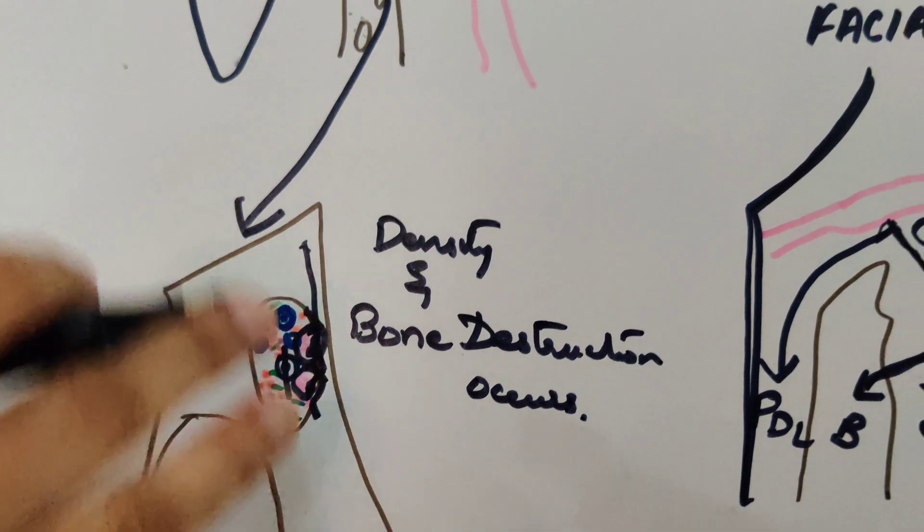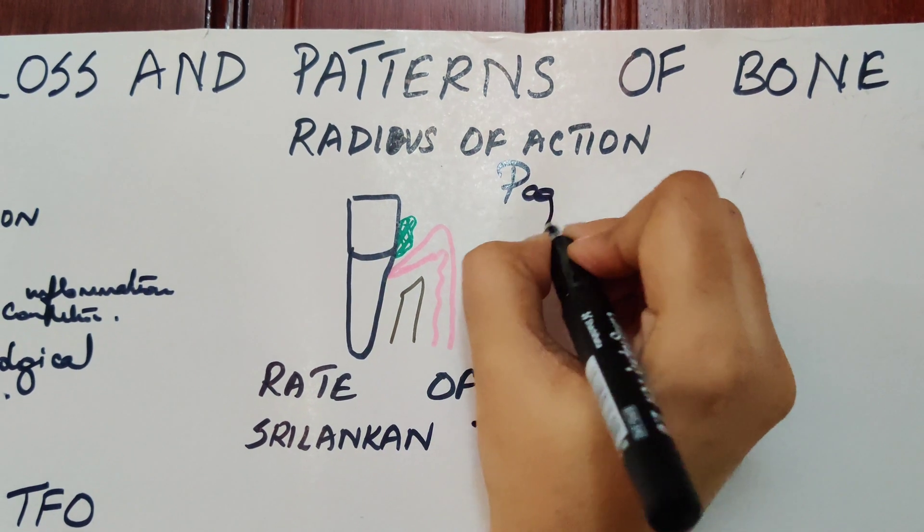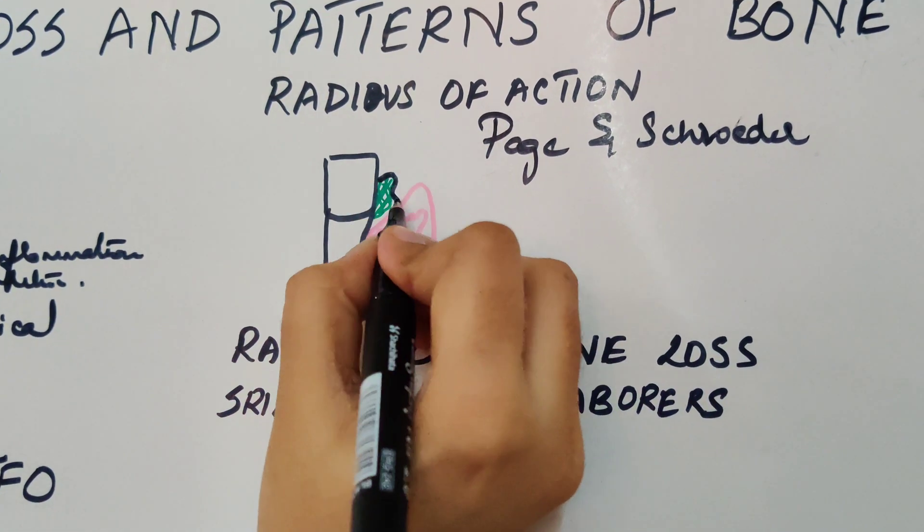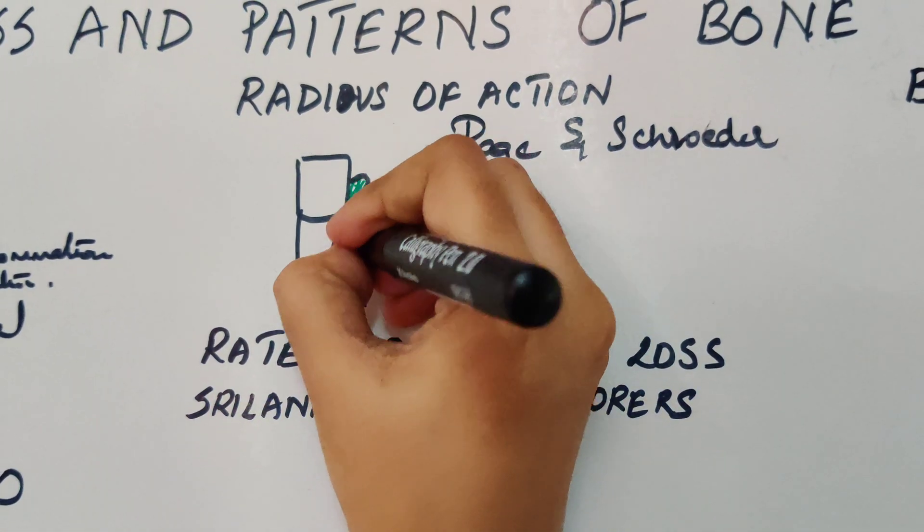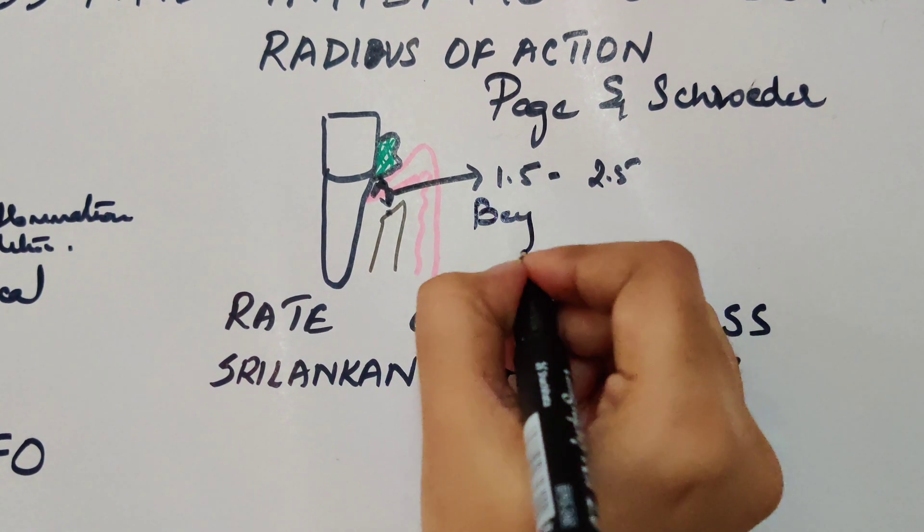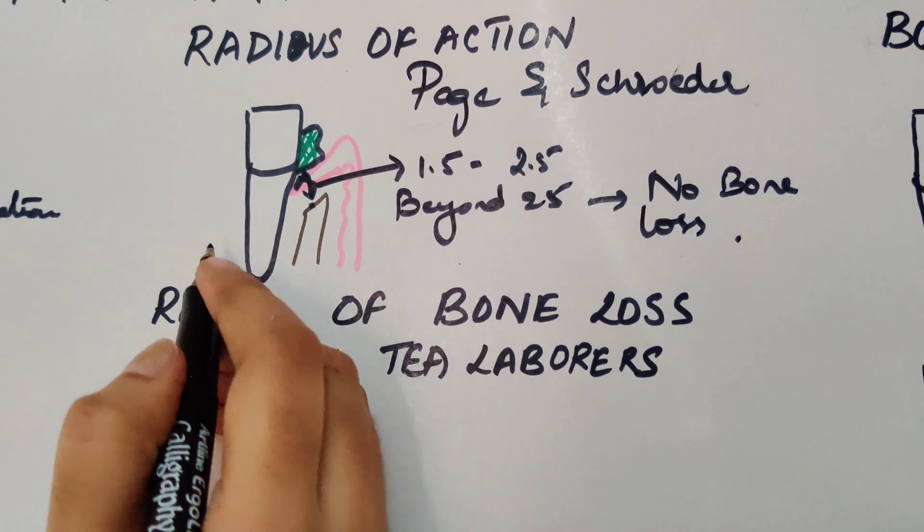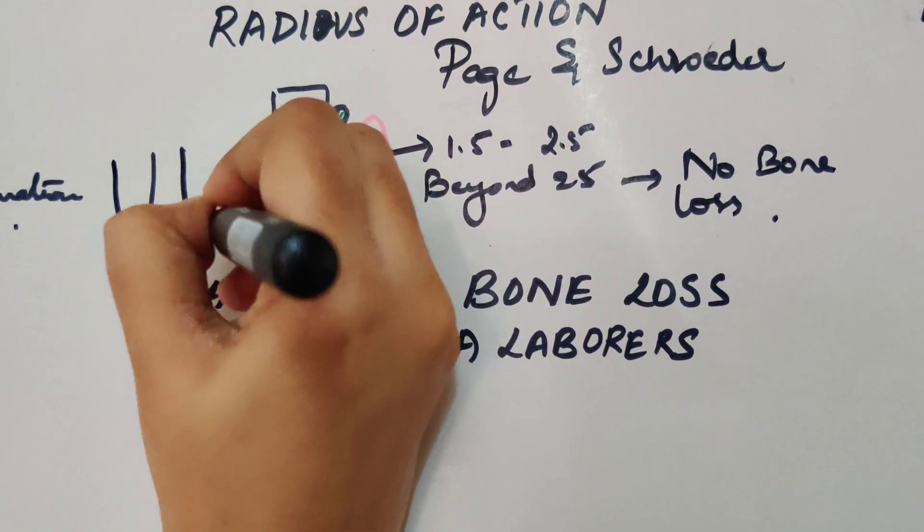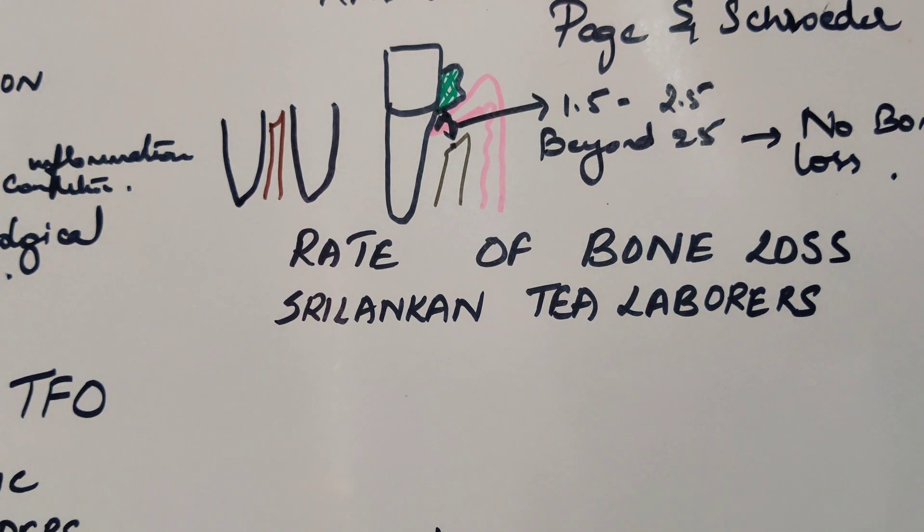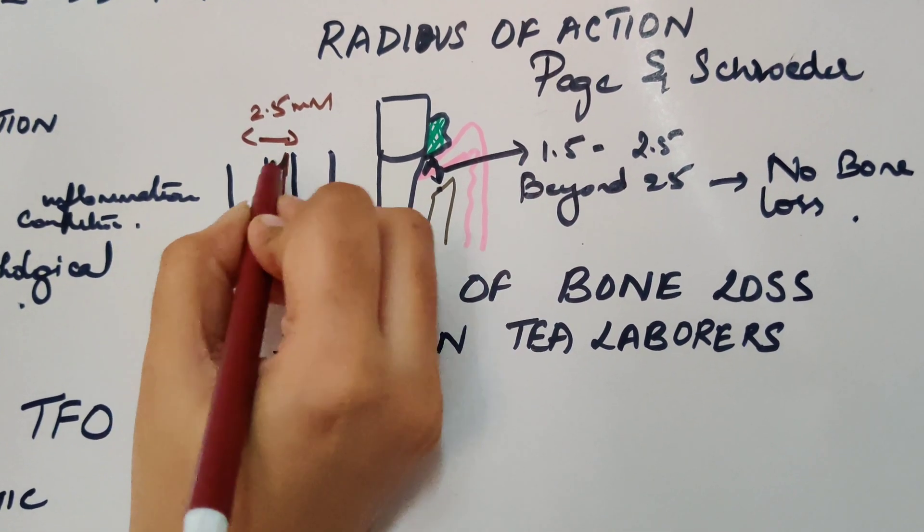Now let's go to a concept called radius of action. This was given by Page and Schroeder. What they did was they took Waerhaug's measurements and they told that for this plaque to induce a bone loss, the minimum range of effectiveness should be from 1.5 to 2.5 mm. If this goes beyond 2.5 mm, then there will be no bone loss. One more concept: imagine this to be the tooth. This is your interproximal bone. If this is more than 2.5 mm, there is a lot of chance that you get an angular defect, but if this is a narrow space instead, then you will have a horizontal bone loss.